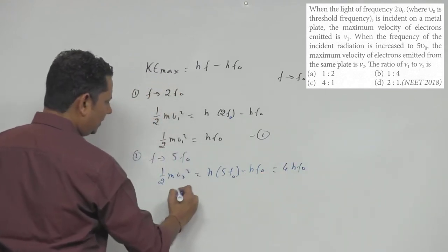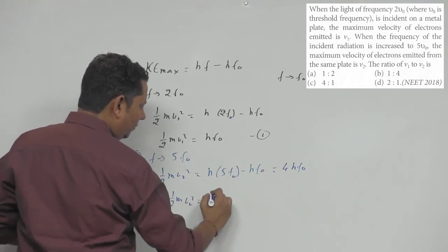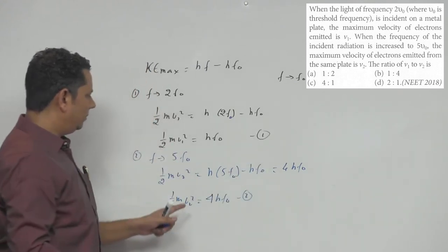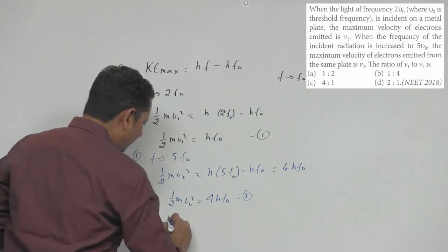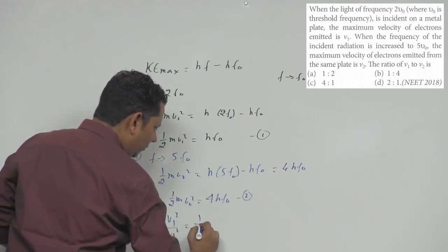The right-hand side becomes 4HF₀. So your second equation is ½mV₂² will be equal to 4HF₀. Now we divide these equations. The ½m terms cancel, giving us V₁² divided by V₂² equals 1 by 4.